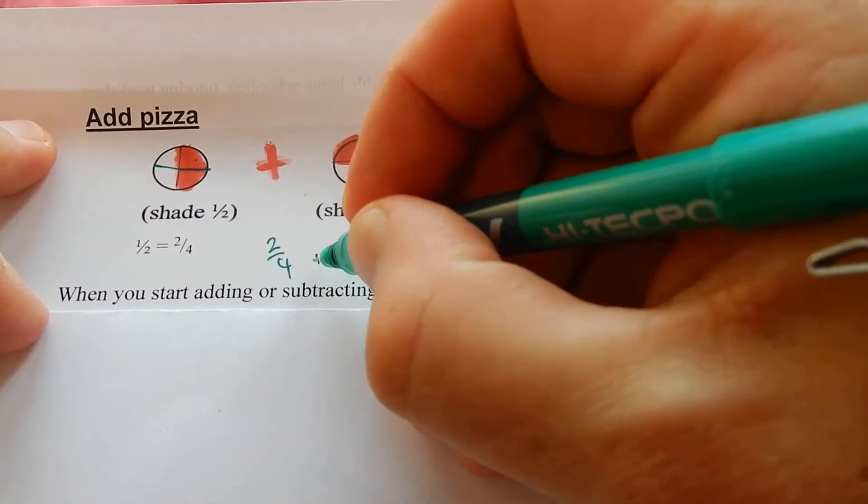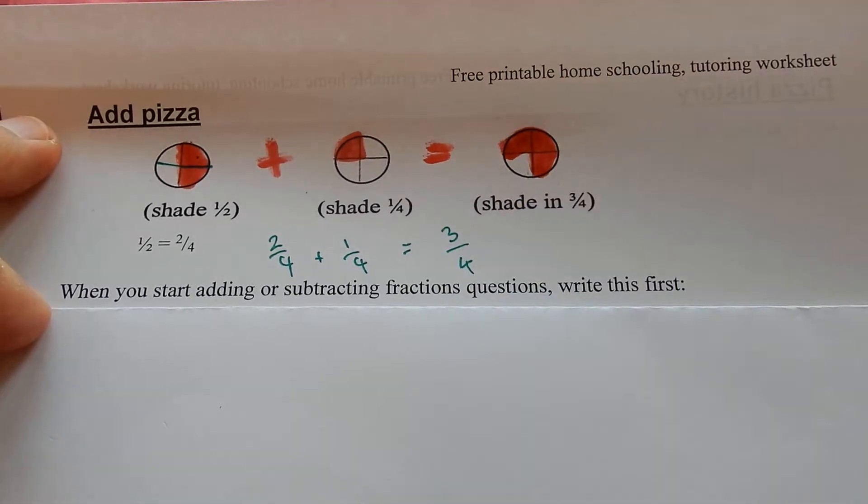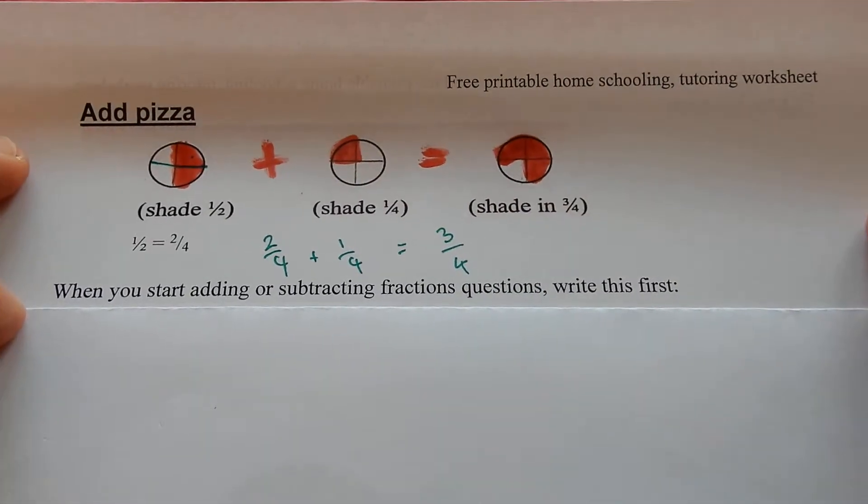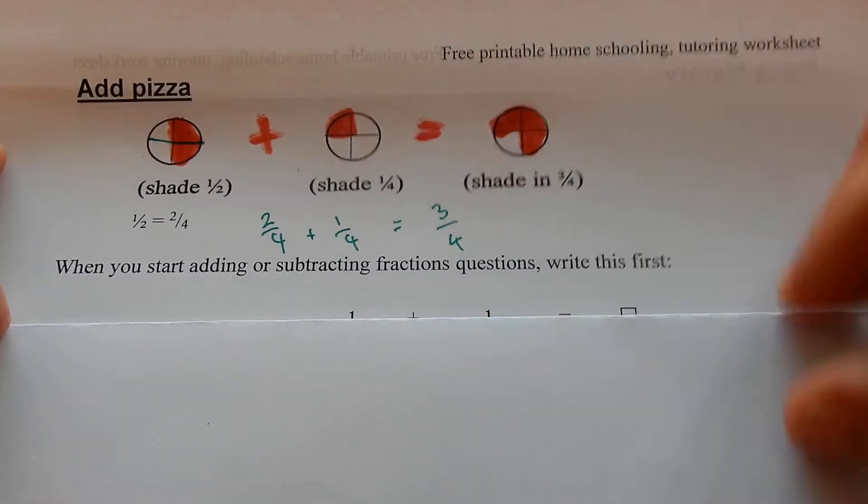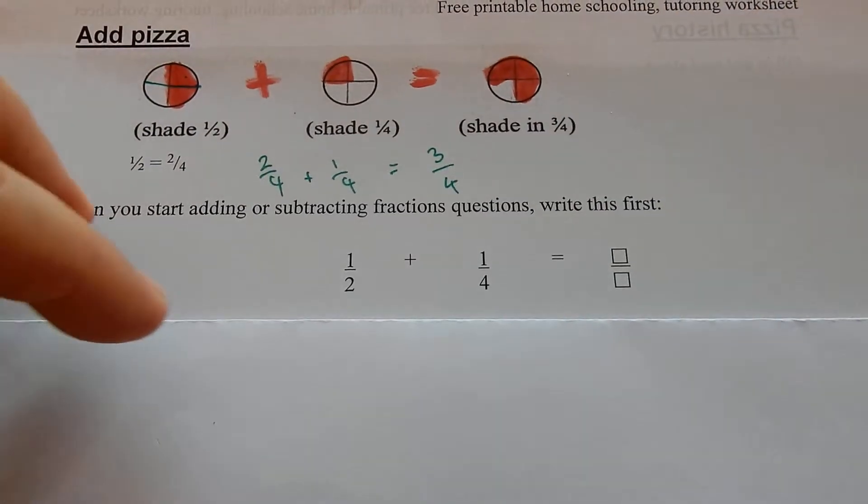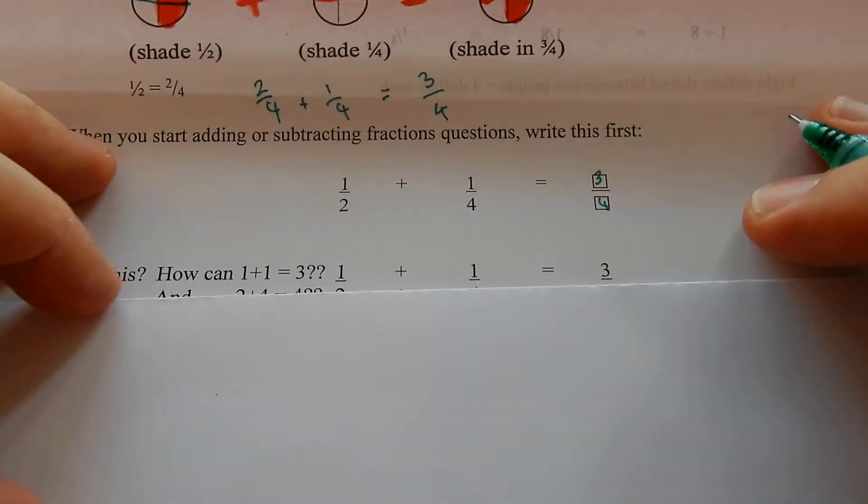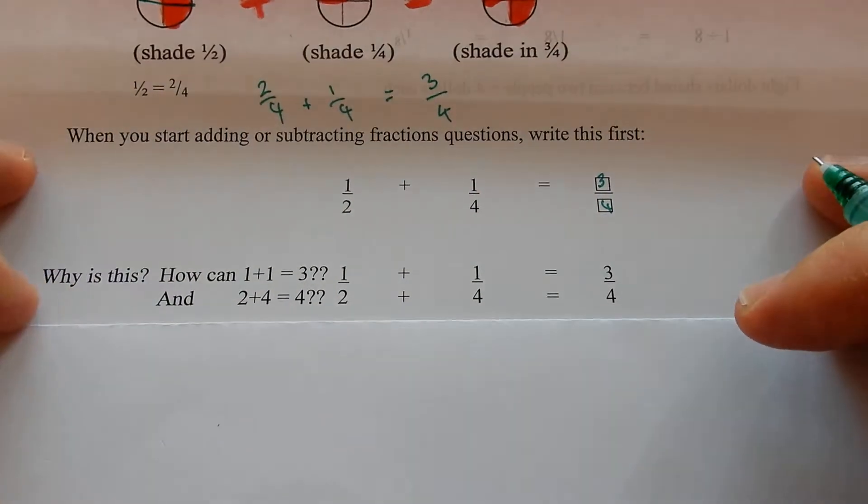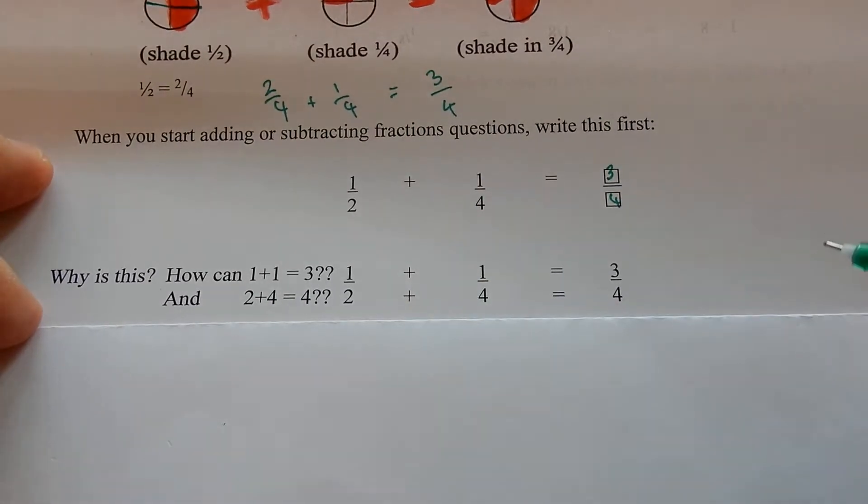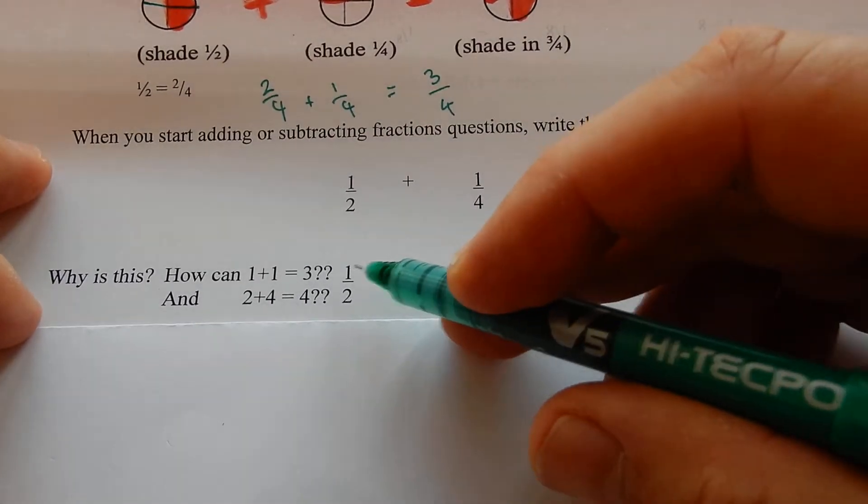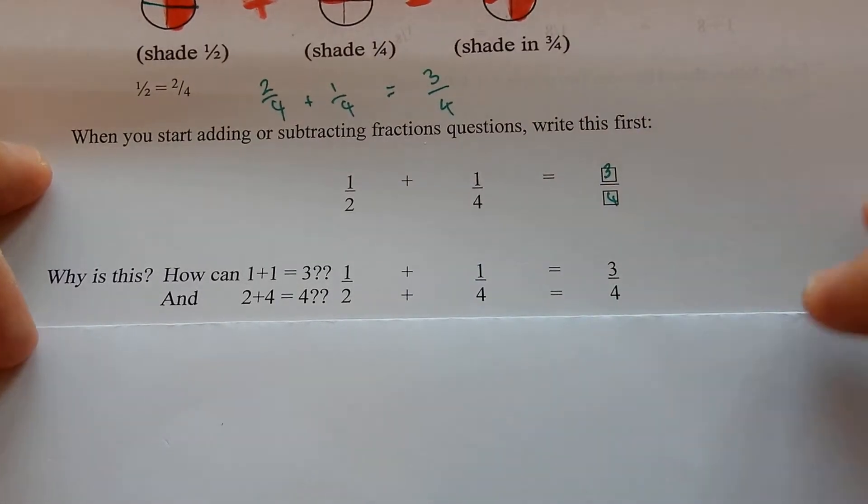Two quarters plus one quarter equals three of them. When you start adding or subtracting fractions questions, write this first. Half plus a quarter equals three quarters. That reminds you that you've got to get the bottoms the same. Why is this? How can I have one plus one equals three? Well it's not. It's one plus one equals three. Two plus four equals four. It doesn't make any sense.